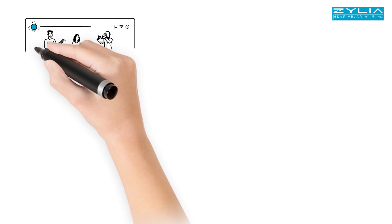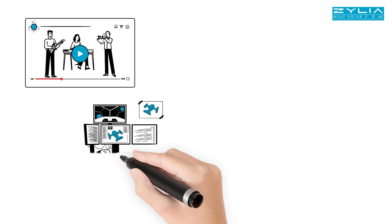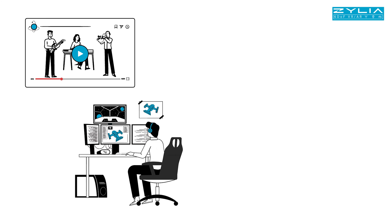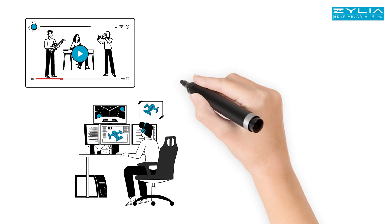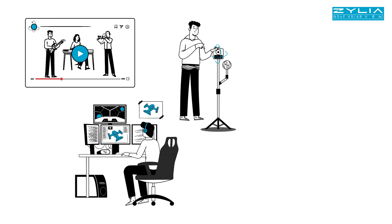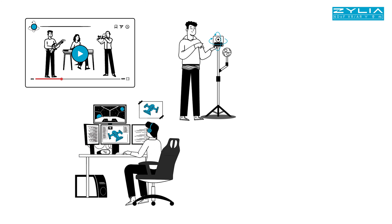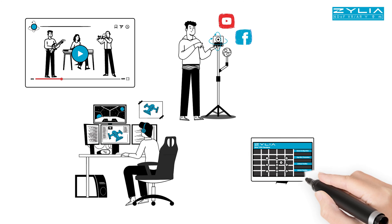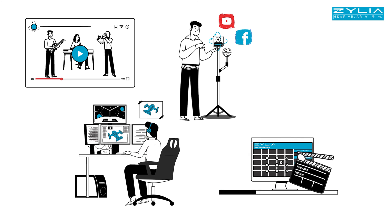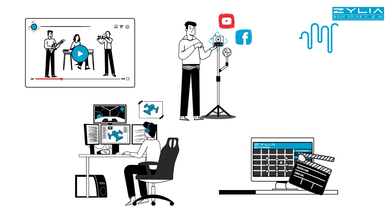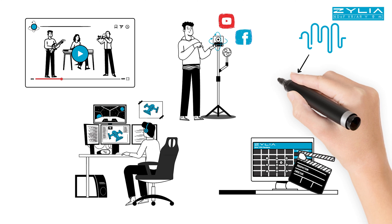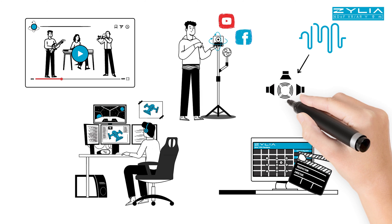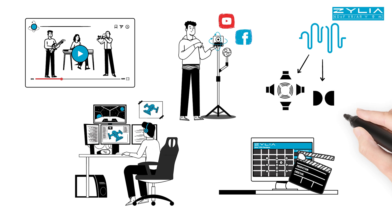Stream virtual concerts with 3D navigable sound. Create navigable audio content and ambiences for games. Connect multi-point 360-degree video with 360-degree sound and share it on YouTube and Facebook. Have unlimited audio post-processing options for movies. Decode 6DOF ambisonic sound to any format, including surround, Dolby Atmos, or binaural.